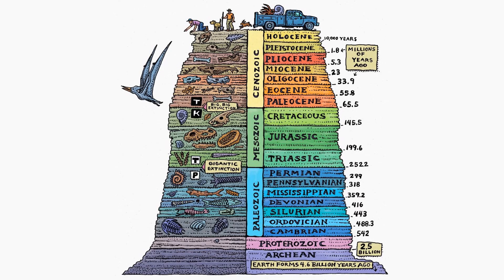Predation, bioturbation, tiering, and biodiversity are just a few of many things with significant trends in their evolution over time. As you continue to look carefully at the geologic record, you are bound to find many more intriguing ways that life and environments have changed over time.